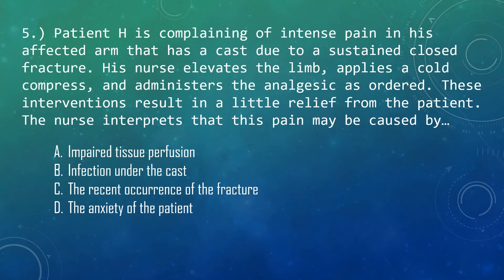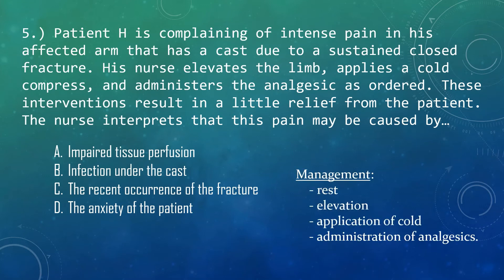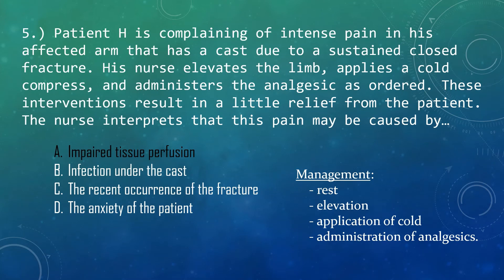Question 5: Patient H is complaining of intense pain in his affected arm that has a cast due to a sustained closed fracture. His nurse elevates the limb, applies a cold compress, and administers the analgesic as ordered. These interventions result in little relief for the patient. The nurse interprets that this pain may be caused by what? Most pain associated with fractures can be minimized with rest, elevation, application of cold, and analgesics. Pain not relieved by these measures should be reported to the physician, as pain unrelieved by medications and other measures may indicate neurovascular compromise. Since this is a new closed fracture and cast, infection would not have had time to set in. Therefore, the correct answer is letter A — impaired tissue perfusion.